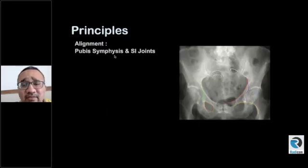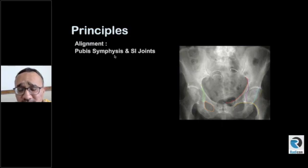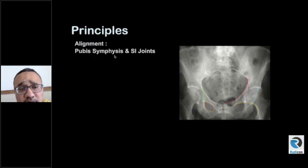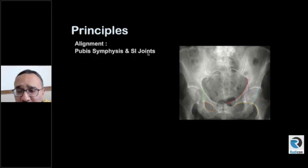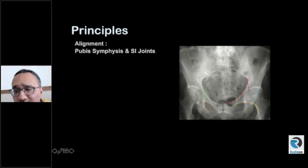Talking about basic principles to approach the pelvic radiograph: for alignment, you look at the pubic symphysis and the sacroiliac joints. There are lines commonly used to assess any subtle abnormality. The yellow line is called the central line, starting from the inferior aspect of the superior pubic symphysis going along the femoral neck, and if there is any angulation you have to think about a femoral neck fracture.